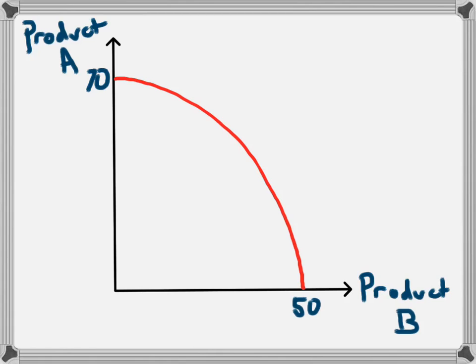In this example, if the economy only produced product A, they could produce 70 of that product. If they put all of their resources into producing product B, they could produce 50 of that product.